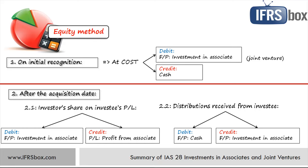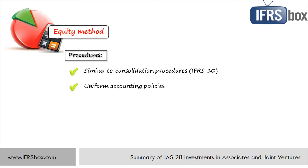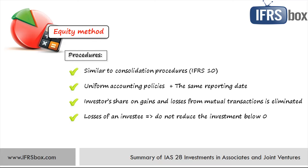Many procedures under the equity method are similar to consolidation procedures in IFRS 10. For example, both the investor and the associate must use the same or uniform accounting policies for similar transactions; if they differ, adjustments may be necessary. They should also use the same reporting date. Similar rules apply to mutual transactions, but unlike full consolidation you do not eliminate mutual balances like receivables and payables — instead you focus only on the gain or loss on mutual transactions and eliminate only the investor's share. One more important rule: when your associate is loss-making, you should never reduce the carrying amount of your investment below zero — you simply stop recognizing further losses.